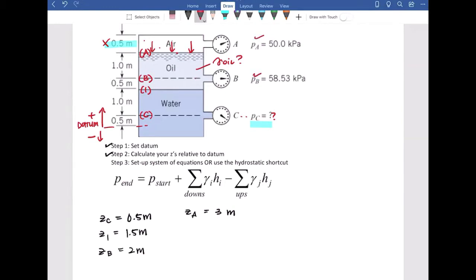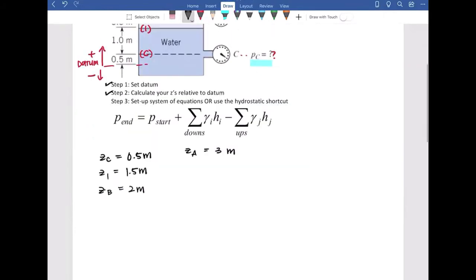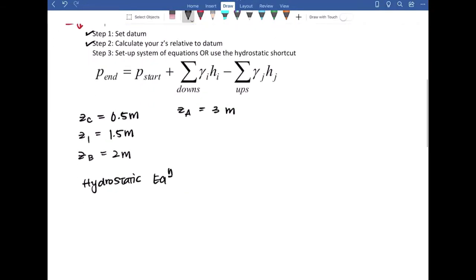We know our elevations at A and B. The only thing that we don't know is our gamma oil. So if we write our hydrostatic equation, which states that delta P is negative gamma delta Z.